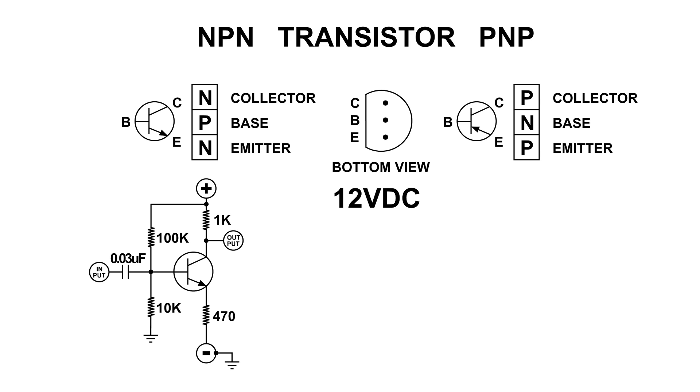And what that means is as the current changes through the 470 ohm resistor, it influences the bias between the emitter and base of the NPN transistor.